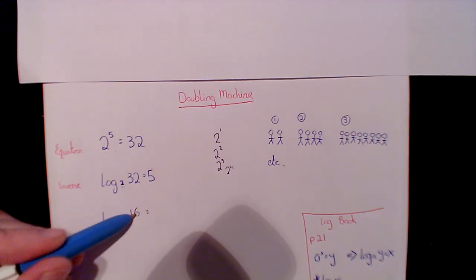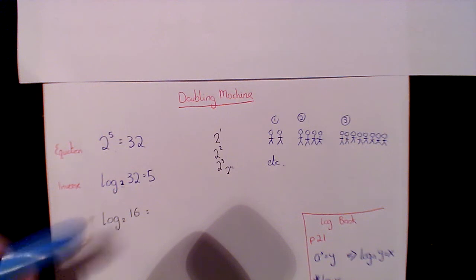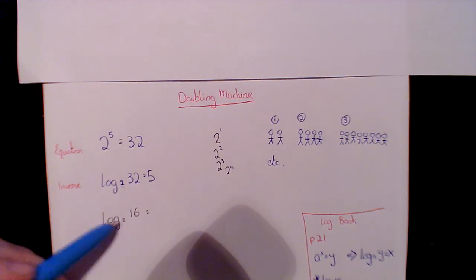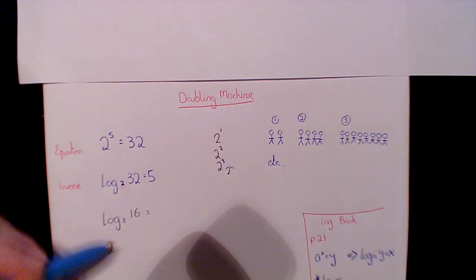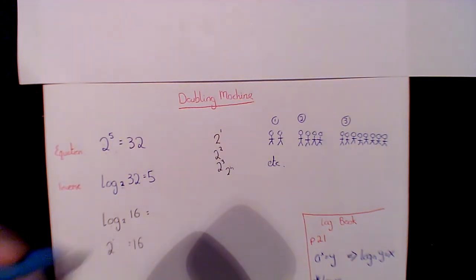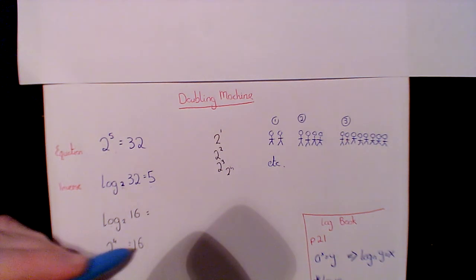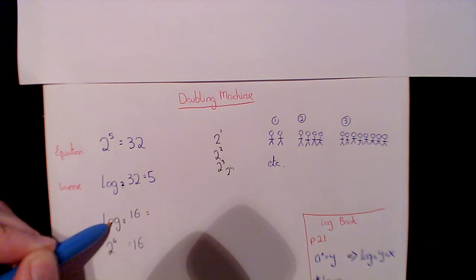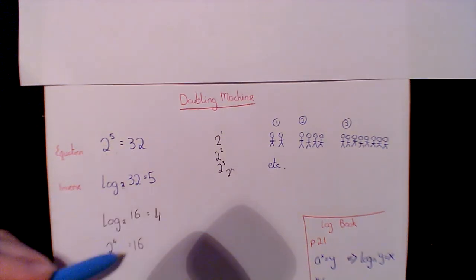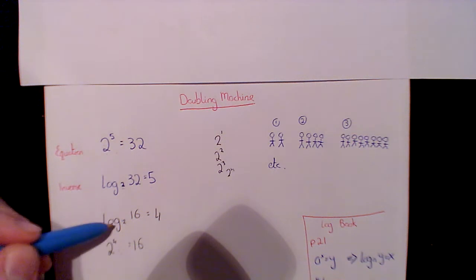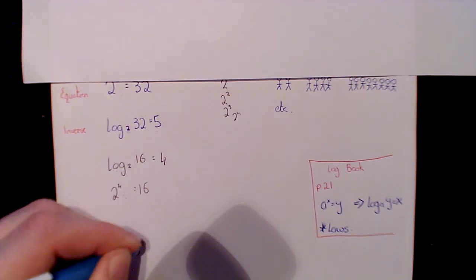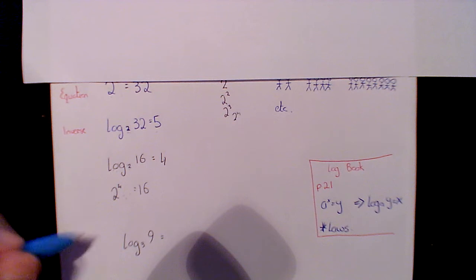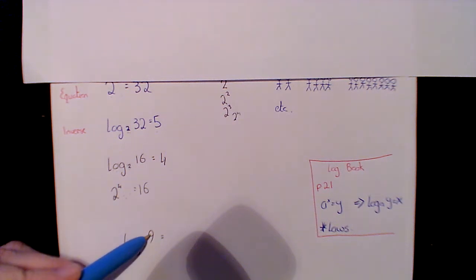Let's solve log₂16. The question is: how many times do I have to multiply 2 by itself to get to 16? That's the same as asking: 2 to the power of what gives me 16? The answer is 4, because 2 multiplied by itself 4 times is 16. Therefore log₂16 = 4. Another example: how many times do I multiply 3 by itself to get to 9? 3 squared is 9, so log₃9 = 2.